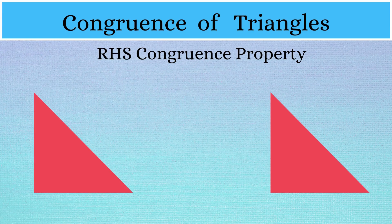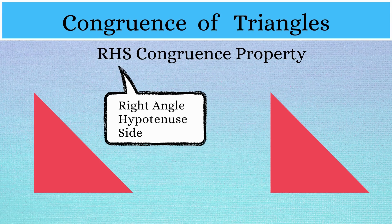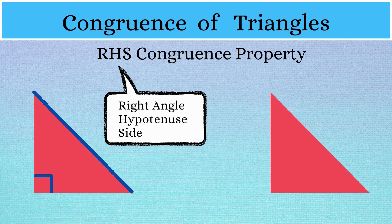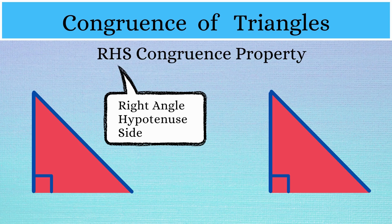We now move on to the RHS congruence property. RHS stands for right angle, hypotenuse, and side. This is a special property to verify the congruence of right triangles only. In this property, the three conditions to be verified are: the right angle, hypotenuse, and a side of one triangle should be equal to the right angle, hypotenuse, and the corresponding side of the other triangle.